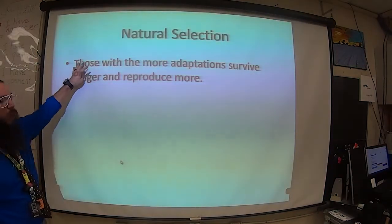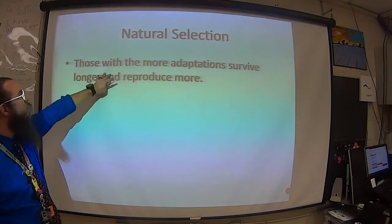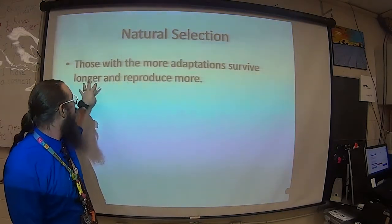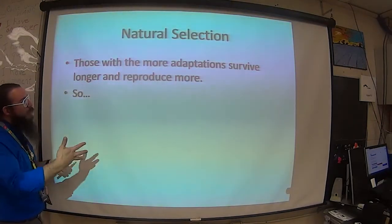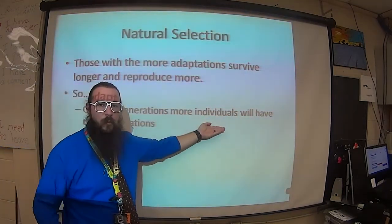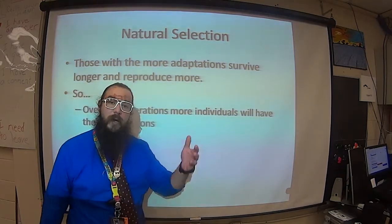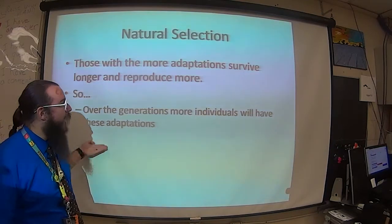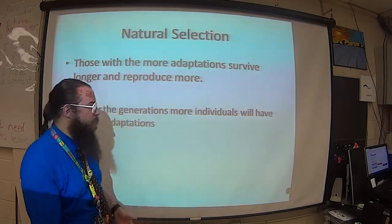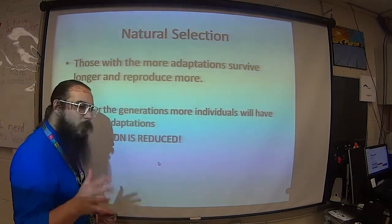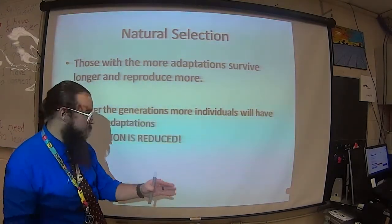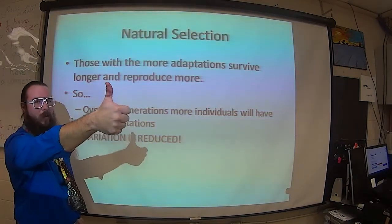With natural selection, not everyone is the same in the population, and those with more adaptations — traits that help them survive better — will survive longer. Because they survive longer, they are more likely to make more offspring. Over many generations, you'll see more individuals in the population with those adaptations, because that helped their ancestors survive and make more of them. As a result, because we're cutting out the less-fit traits, variation is going to be reduced by natural selection.